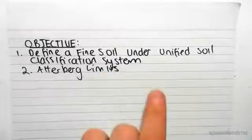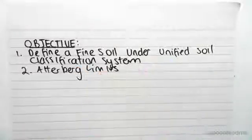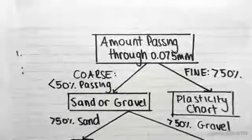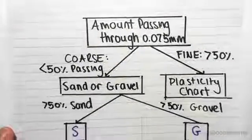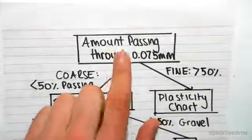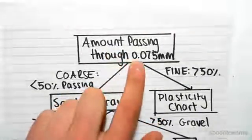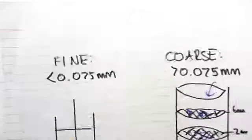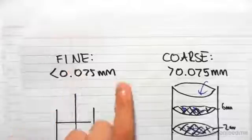So the first thing is this Unified Soil Classification System. This is a system for defining a soil type, and I've summarized this in this flowchart which is going to be seen in the next couple videos. The first branch in our flowchart is the amount passing through 0.075 mm, and we saw in the previous video that was the critical value for a fine or a coarse soil.